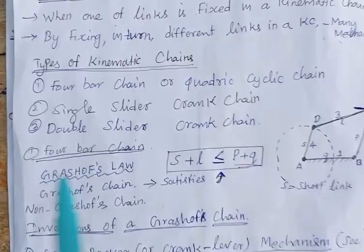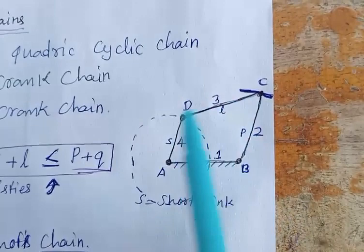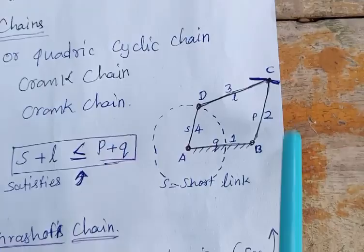First, consider the 4-bar chain. In the 4-bar chain mechanism, here is the frame. The shortest link is called the crank. This is the connecting rod, and this one is the oscillating lever, which is used in the crank and slotted lever mechanism in a shaping machine. The crank rotates and we obtain oscillatory motion at C. This is called the 4-bar mechanism.